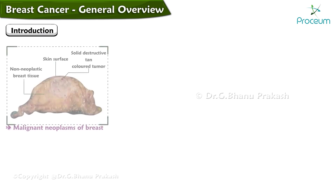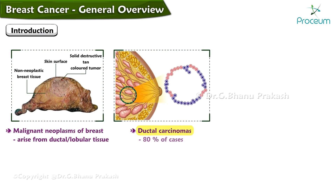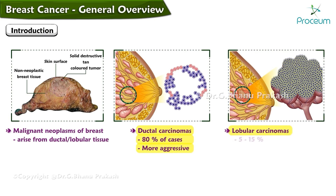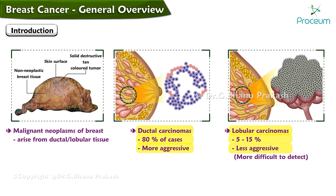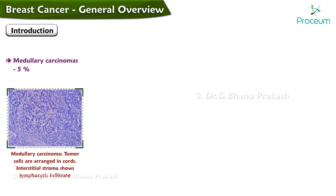Breast cancer refers to malignant neoplasms of the breast that can arise from ductal or lobular tissue. Ductal carcinomas account for 80 percent of cases and are more aggressive, whereas lobular carcinomas account for 5 to 15 percent and are less aggressive but more difficult to detect. Medullary carcinomas account for 5 percent.